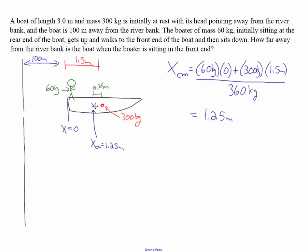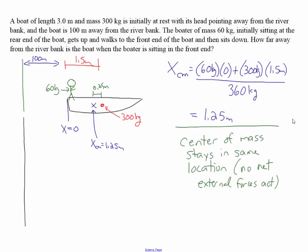At the marked point, this is the position of the center of mass of the man-boat system. That center of mass is going to stay stationary. As the man moves forward and the boat moves backward, the center of mass is going to stay in that exact same position, because there are no net external forces acting.